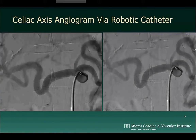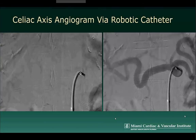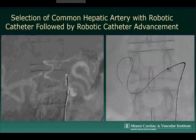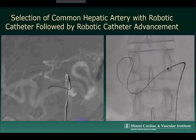Once the celiac axis was selected, a celiac angiogram was performed through the 6-French robotic catheter, showing conventional anatomy with a splenic artery, a left gastric artery, and a common hepatic artery. These images then demonstrate selection of the common hepatic artery with the robotic system in conjunction with a 0.035 glide wire.